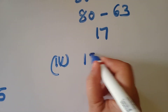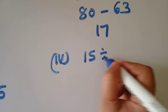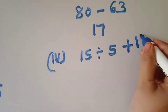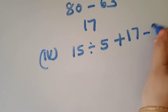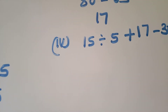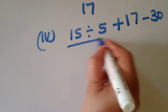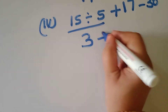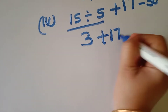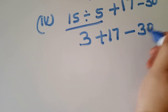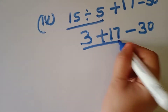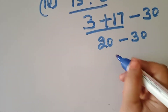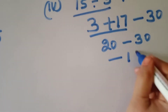Fourth one: 15 is divided by 5 plus 17 minus 30. First, take the division quantity: 15 divided by 5 is 3. So 3 plus 17 minus 30. 3 plus 17 is 20, minus 30 equals minus 10.